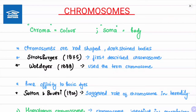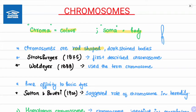Welcome everyone to our channel Regalia. Today's topic is chromosomes. The word 'chroma' means color and 'soma' means body, so chromosomes are rod-shaped, darkly stained bodies.